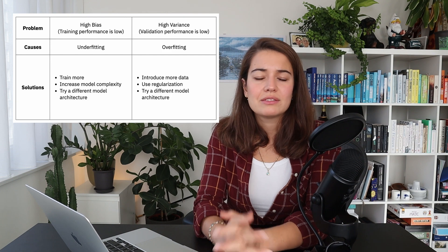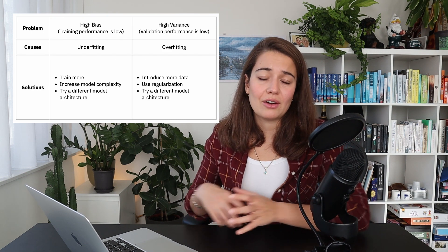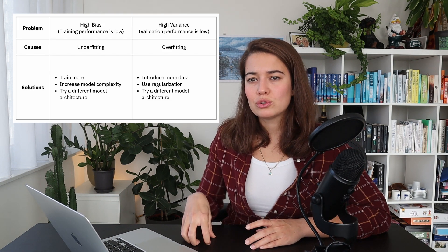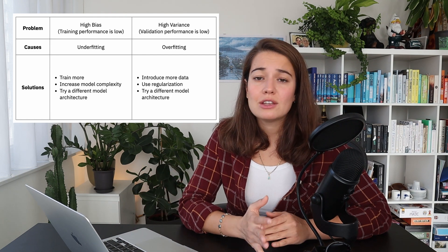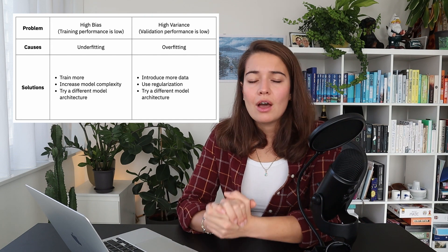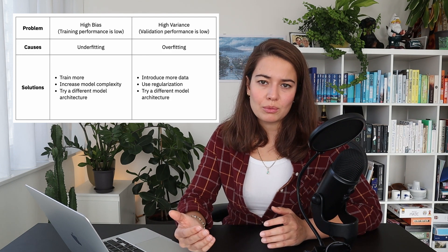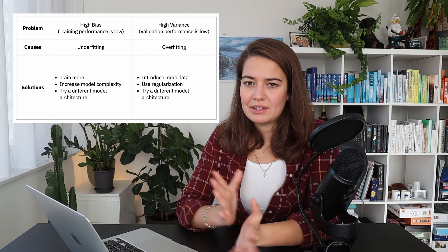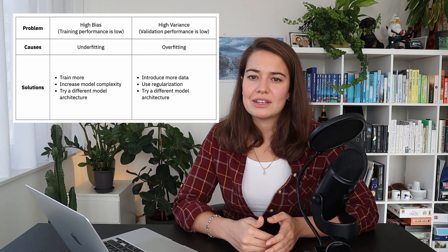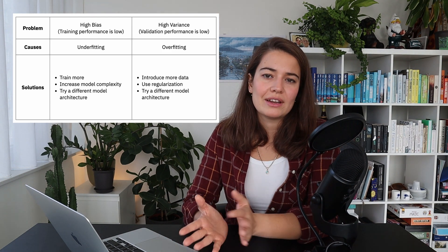Whereas if we look at the high variance case, we have overfitting. When we're overfitting, our model has a hard time generalizing to the real world — we are fitting so much to the data set at hand that we are not able to understand what happens in the real world. One thing you can do is to use a different architecture; maybe the architecture you're using is too complex for the data you have and you need something simpler. Or you can introduce more data — if you have that possibility, including more data will help the model generalize better and see more general patterns without overfitting. The last thing you can do is regularization, which is a technique to limit the complexity of your model so that it fits in a more generalized way instead of fitting into the noise present in the data.